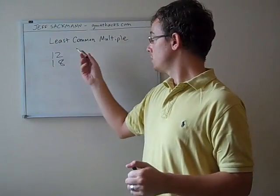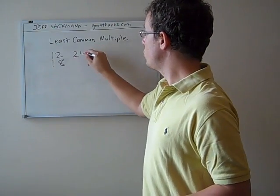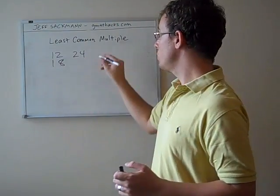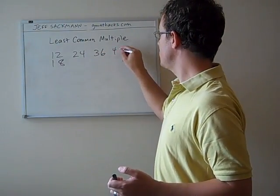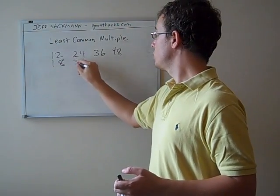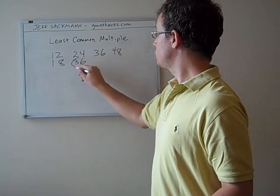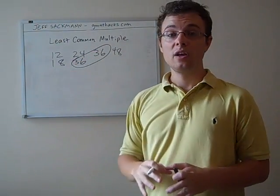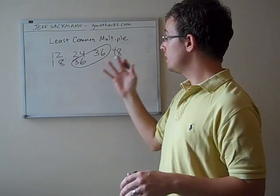So with 12 and 18, 12, multiply that by 2, you get 24, multiply 12 by 3, you get 36, multiply 12 by 4, you get 48, 18, multiply it by 2, you get 36. And we can stop there, 36 shows up on both lists. That means that the least common multiple of 12 and 18 is 36.